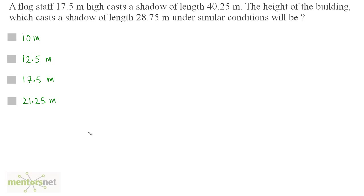A flagstaff 17.5 meters high casts a shadow of length 40.25 meters. The height of the building which casts a shadow of length 28.75 meters under similar conditions will be?